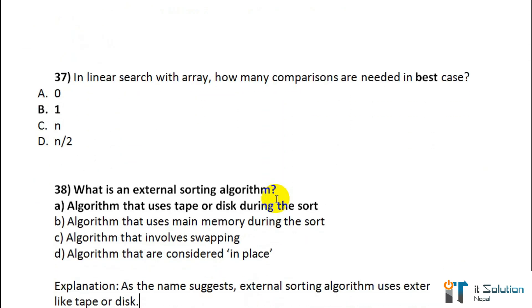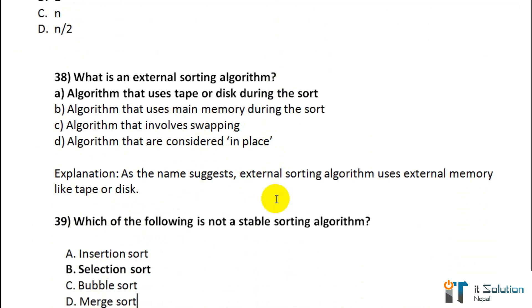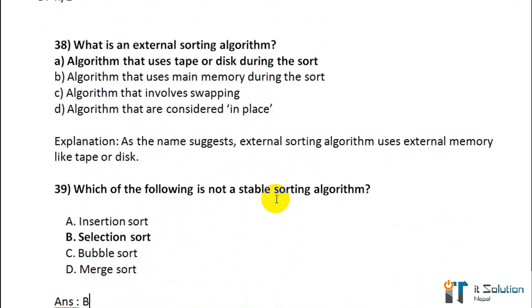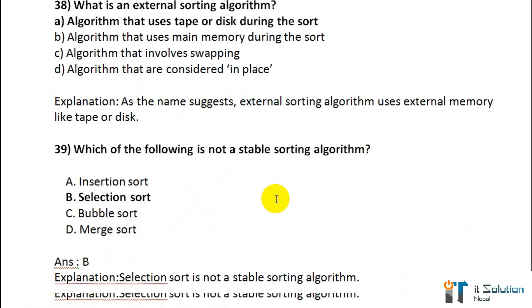Question number 38: What is an external sorting algorithm? Its correct answer is option A — an algorithm that uses tape or disk during the sort. Question number 39: Which of the following is not a stable sorting algorithm? Its correct answer is option B — selection sort.